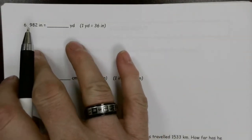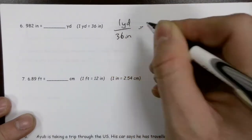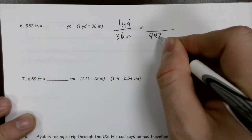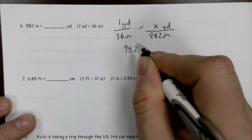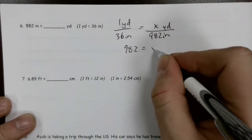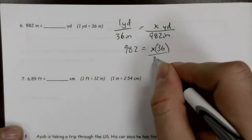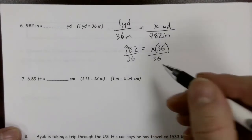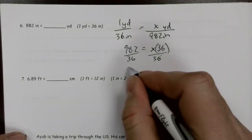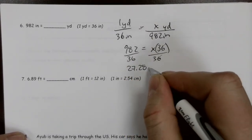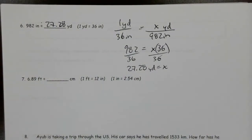92 inches — we want to convert that into yards, working within the imperial system. The conversion is 1 yard equals 36 inches. I've got 982 inches and I want to know how many yards that is. Cross-multiplying: 982 times 1 equals x times 36, so 982 equals 36x. Because I have a coefficient in front of x, I divide both sides by 36: 982 divided by 36. That gives a repeating decimal, so rounding to the nearest hundredth: 27.28 yards, approximately.